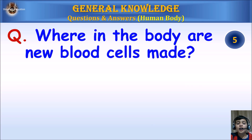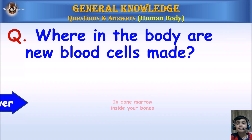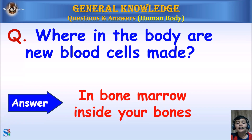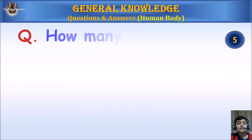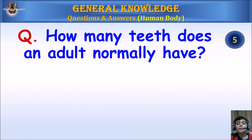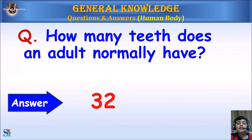Where in the body are new blood cells made? Answer: In bone marrow inside your bones. How many teeth does an adult normally have? Answer: 32.